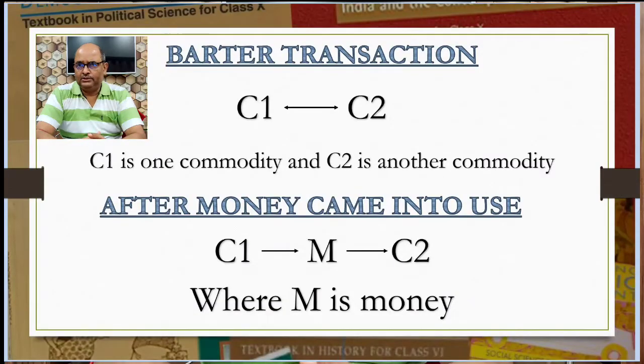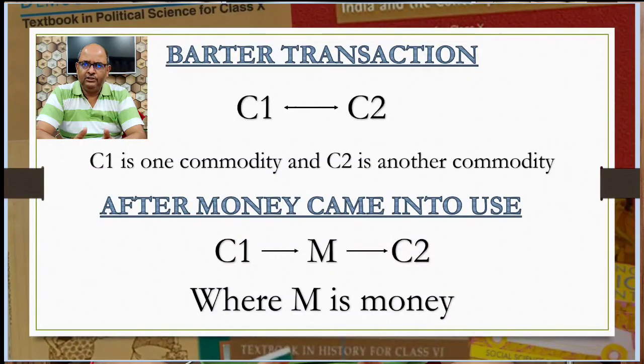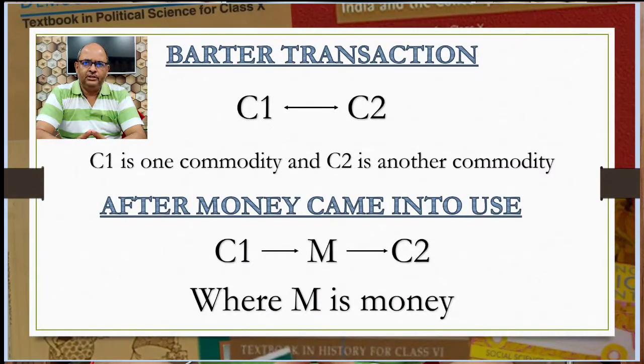Hence money is called a medium of exchange. In the barter transaction, C1 (one commodity) is exchanged directly for C2 (another commodity). With the use of money, the transaction becomes C1 → M → C2, where M is money. I hope you have understood double coincidence of wants and the role of money as a medium of exchange.